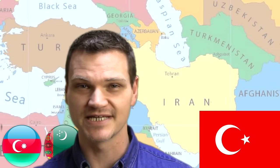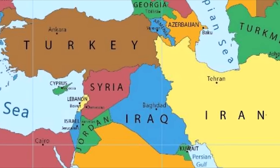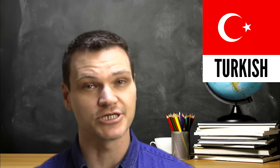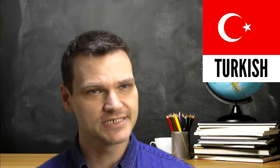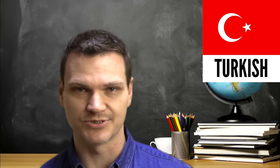Right off the bat, the first thing I want to say is that there is a Turkish language. Because Turkey is situated at the edge of the Middle East, some people think that Turkey is an Arabic country, but it is not an Arabic country. The language of Turkey is Turkish, although there is a small Arabic-speaking minority in Turkey.